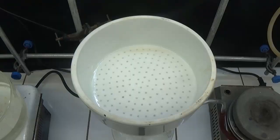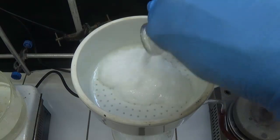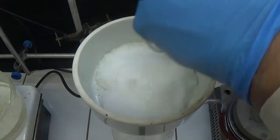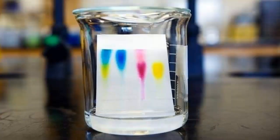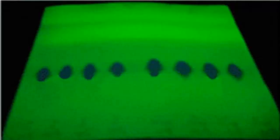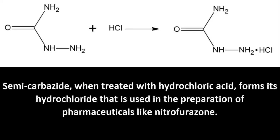In this video we will synthesize semicarbazide with hydrazine and urea. Semicarbazide is used as a reagent in thin layer chromatography. It stains alpha-keto acids that can be seen under ultraviolet light.